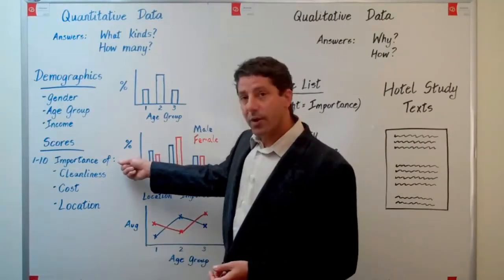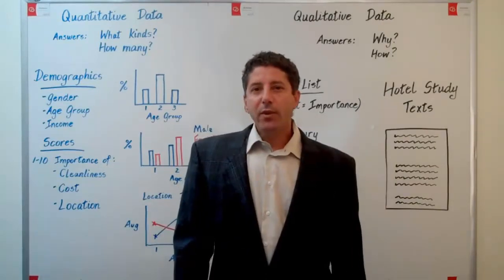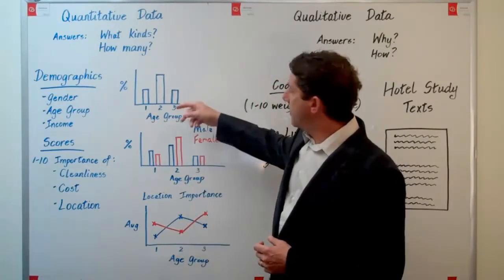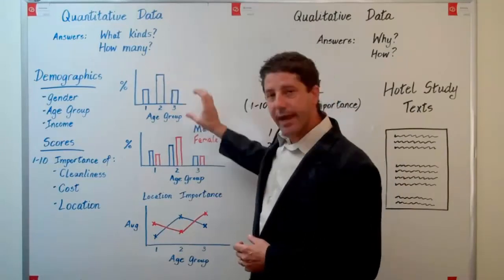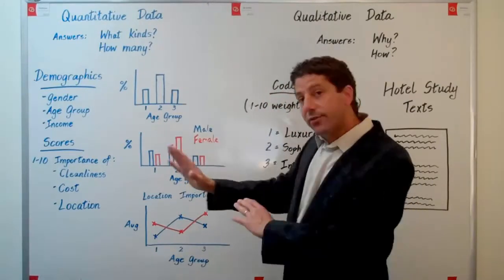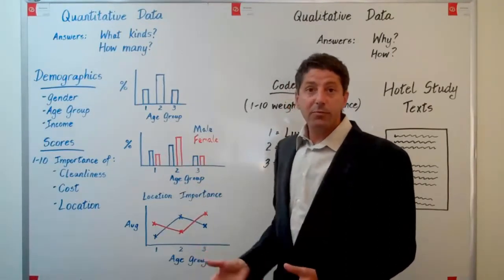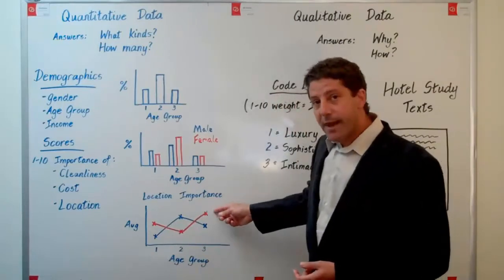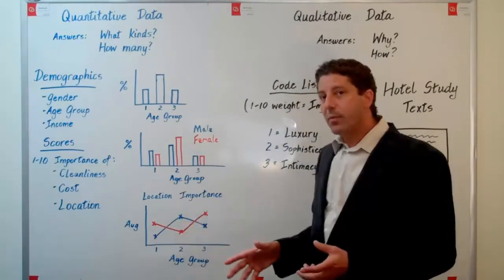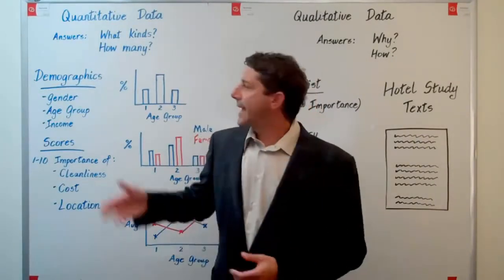We might also ask them to fill out questionnaires and give us ratings on scales. Like when you're making a hotel decision, how important is cleanliness, cost, or location on a scale of 1 to 10? Then what do we do with these data? We can analyze them one variable at a time—for example, age group: what percentage of our population fell into each of three age group categories? We can do bivariate relationships—look at males and females broken out across age groups. Or we can do multivariate analysis—here we have males and females for different age groups, looking at the average importance of location when they're making their hotel decisions.